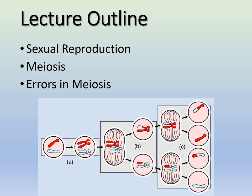Today we'll cover sexual reproduction — a brief review on eukaryotic versus prokaryotic cells, and sexual versus asexual reproduction, including their advantages and disadvantages. Then we'll get into meiosis: what it is, what happens. The first step is very similar to mitosis. We'll also cover what happens when things go wrong in meiosis — chromosomal errors we can now test for during early pregnancies.